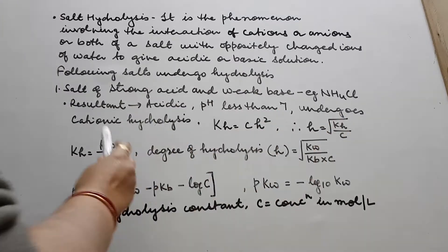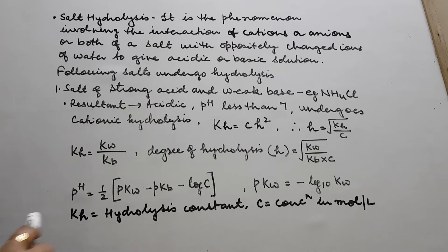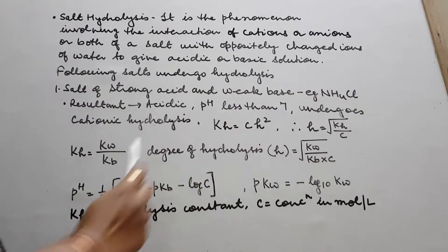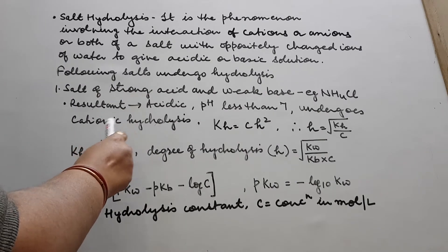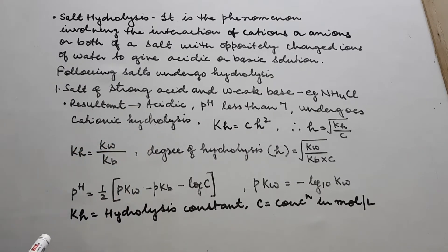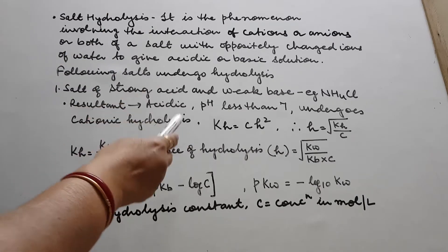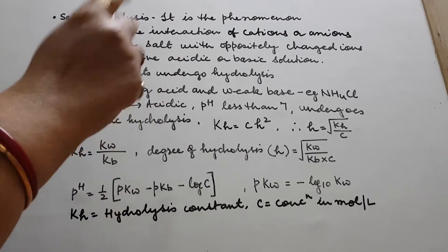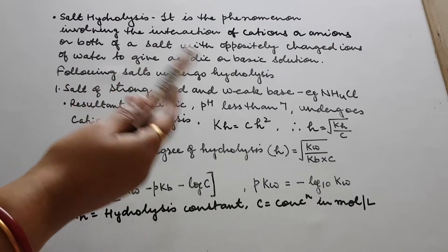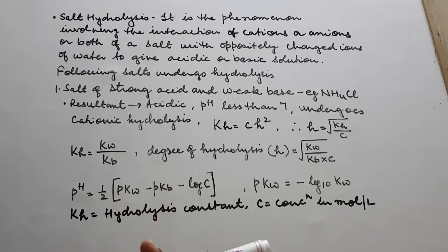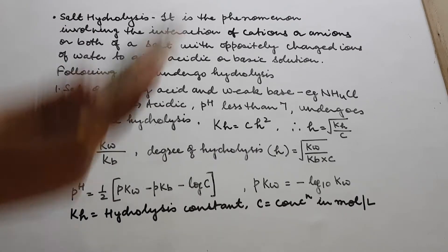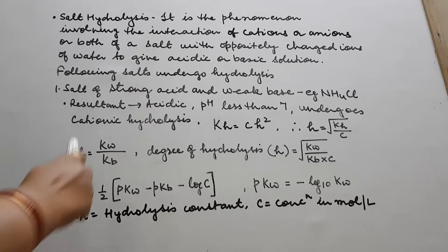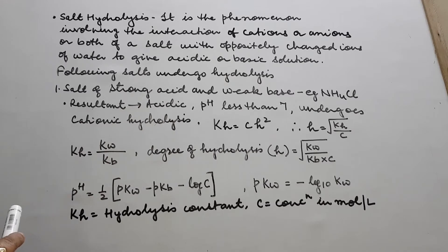This is said to undergo cationic hydrolysis. NH4Cl dissociates into NH4⁺ and Cl⁻. Here, the NH4⁺ ion has undergone hydrolysis, so we say it undergoes cationic hydrolysis — because it has combined with H⁺, the cation of water. Hence, we call it cationic hydrolysis.